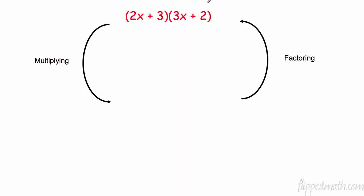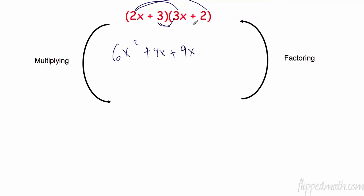Let's do a quick review before we get into it. When we multiply two binomials we distribute: 2x times 3x is 6x squared, 2x times 2 is 4x, 3 times 3x is 9x, and 3 times 2 is 6. When we combine like terms we get 6x squared plus 13x plus 6.